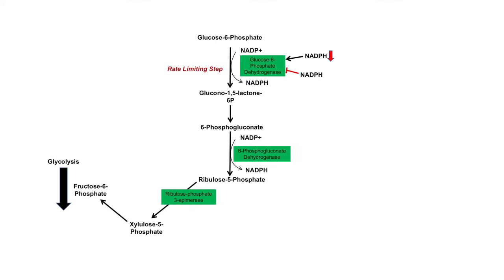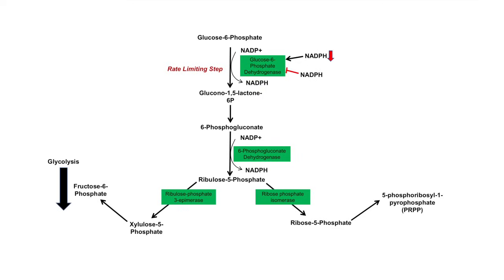Another thing ribulose-5-phosphate can do is be converted into ribose-5-phosphate by the ribose phosphate isomerase enzyme. Once you generate ribose-5-phosphate, it can be converted into 5-phosphoribosyl-1-pyrophosphate, or PRPP. This molecule is very important in medicine — PRPP can be directed into pyrimidine or purine synthesis, so it really determines nucleotide synthesis for cells. Remember: 5-phosphoribosyl-1-pyrophosphate, PRPP.